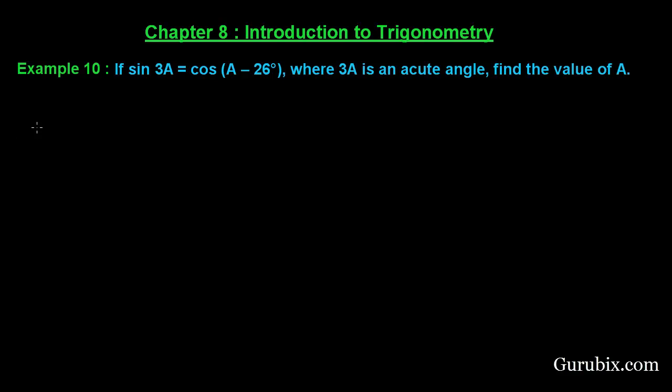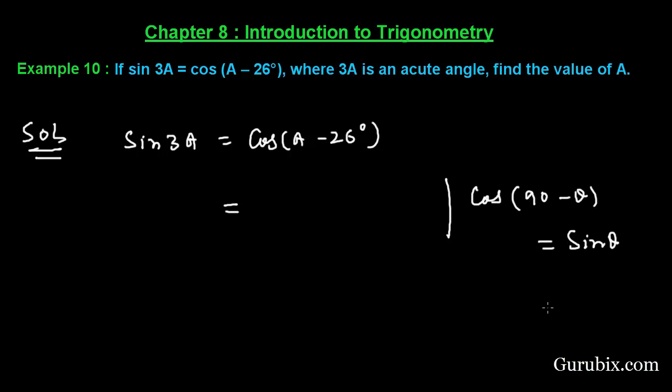This is a very interesting question. Let us solve it. We are given that sine 3A equals cos(A - 26°). We know that cos(90° - θ) equals sine θ.